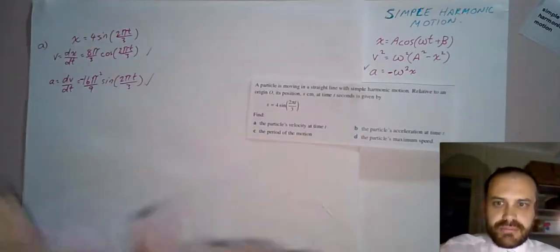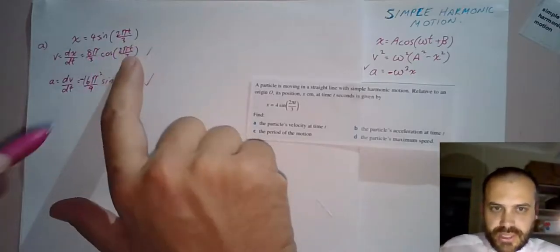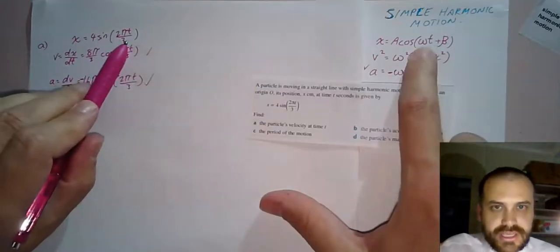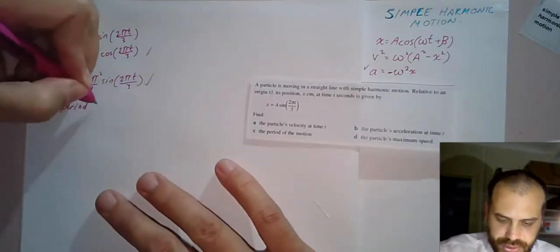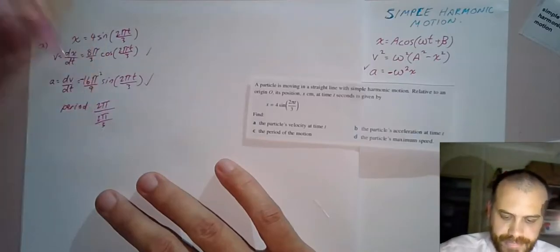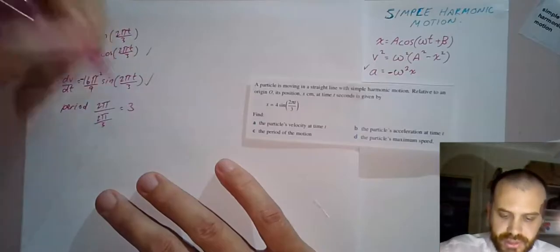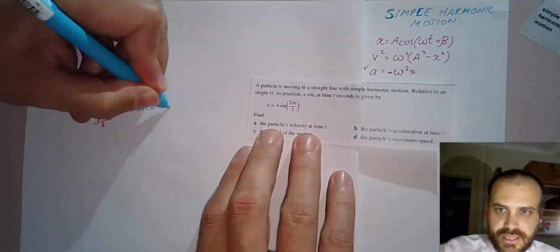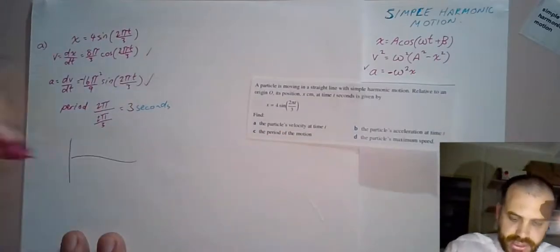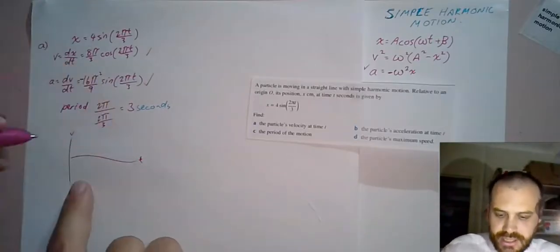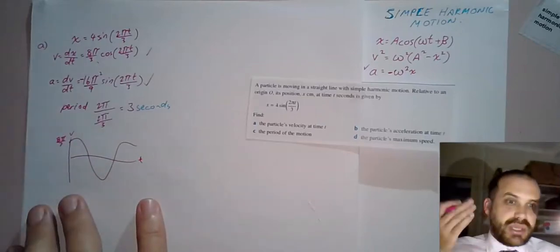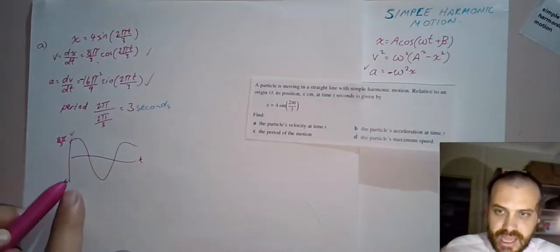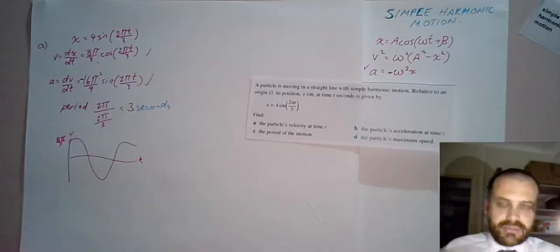What is the period of the motion? We know that period equals 2π over b, or omega. So period equals 2π over 2π/3, which equals 3 seconds. Don't forget your units. Finally, it asks for the particle's maximum speed. The velocity function is a cos graph, and the amplitude is 8π/3, so that's our maximum speed. Remember, speed is non-directional.